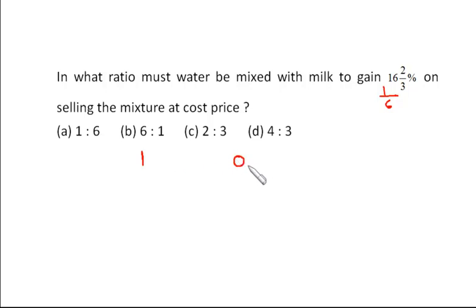By mixing both of them, we have to sell the adulterated milk (the water-mixed milk) at 1 rupee per liter. That means the selling price of the mixture is 1 rupee per liter, and we are making a profit of 1/6, or 16 2/3 percent.